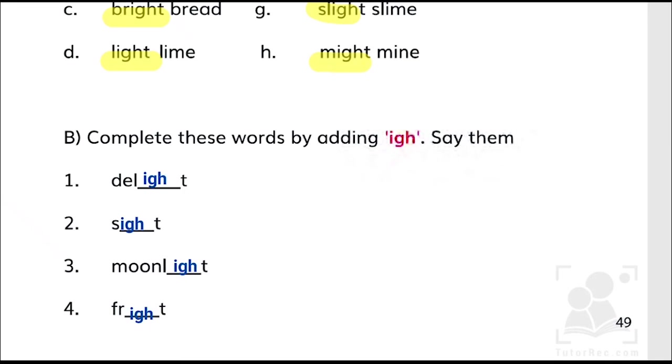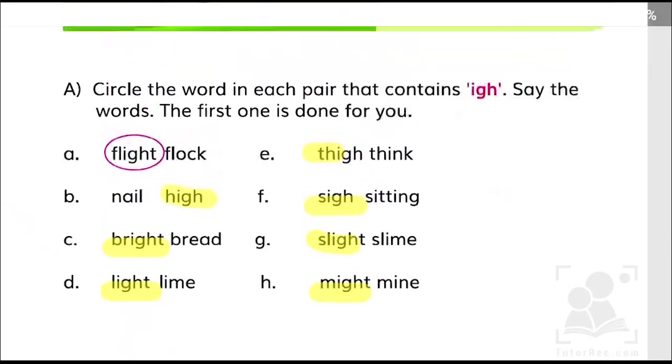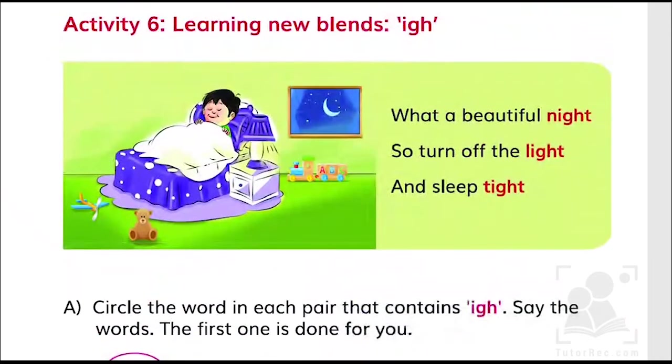So kids, this is all about the activity learning new blends, in which we learned about IGH, TCH, and THR—three different blends related to the story that we learned in the previous unit. I hope you understood and enjoyed the video. I'll be back with some more videos. Till then, take care of yourselves. Bye!